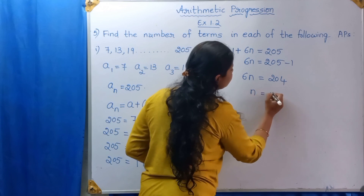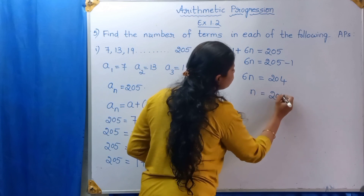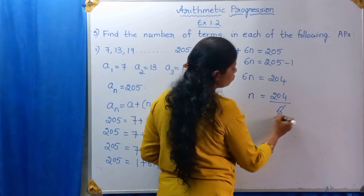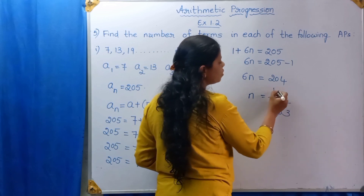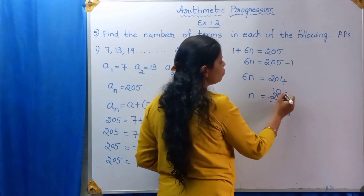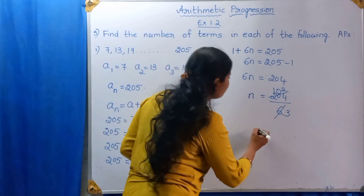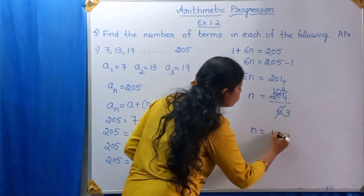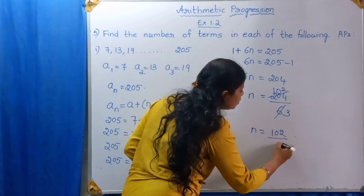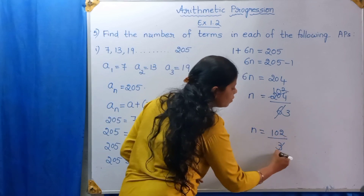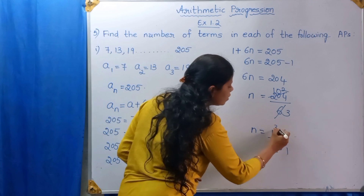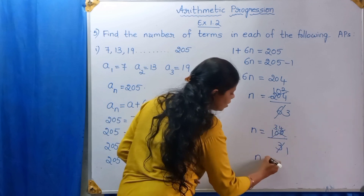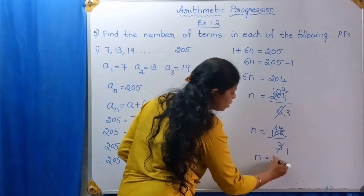N is equal to 204 divided by 6. Simplifying: 204 divided by 6 gives 102 divided by 3, which equals 34. Therefore, N is equal to 34.